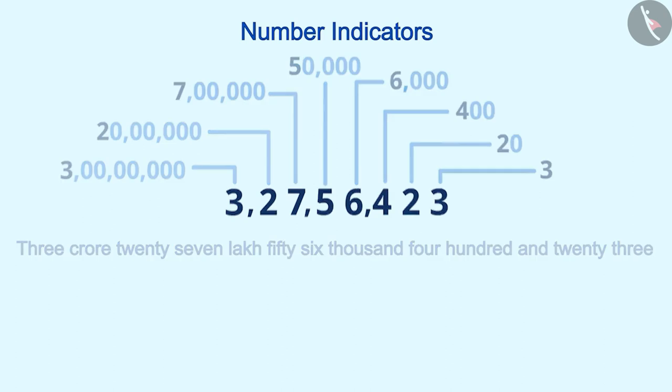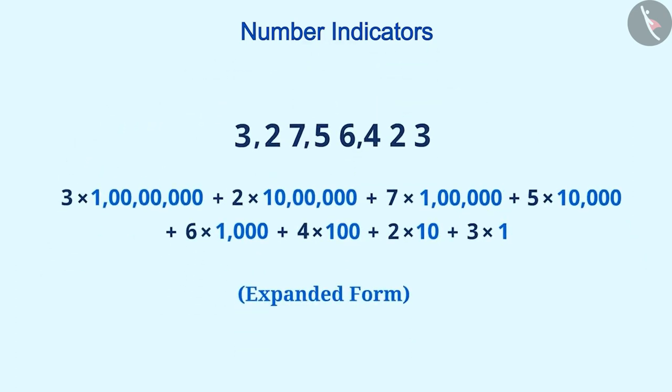In the same way, we can write the expanded form of this number like this. From the expanded form, we can say that this number consists of 3 groups of 1 crore, 2 groups of 10 lakh, 7 groups of lakh, 5 groups of 10,000, 6 groups of 1,000, 4 groups of 100, 2 groups of 10, and 3 units.